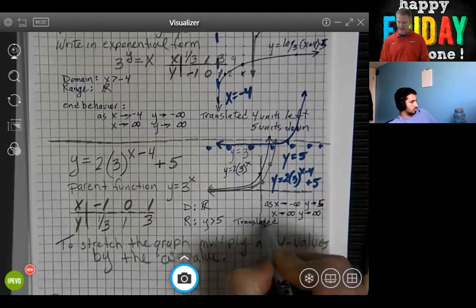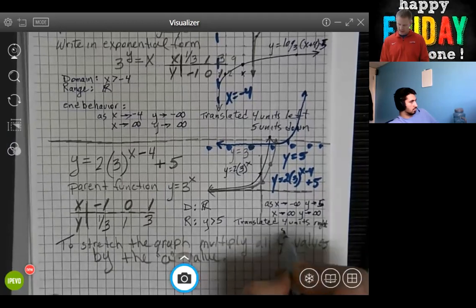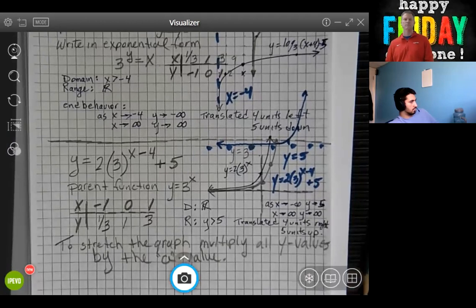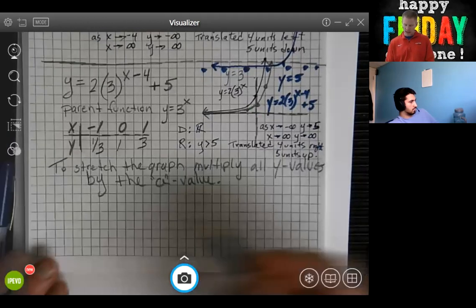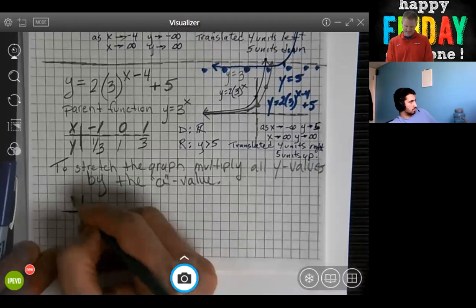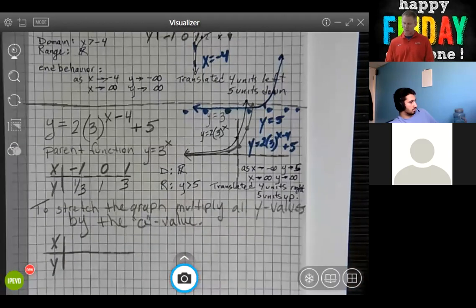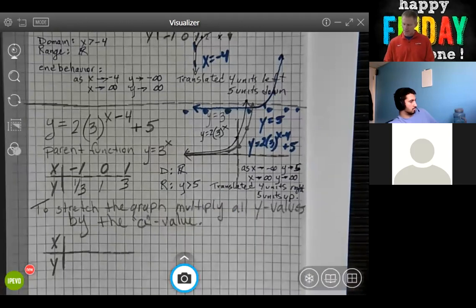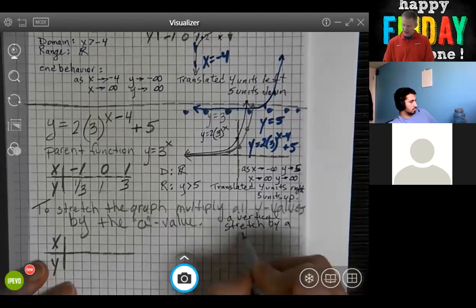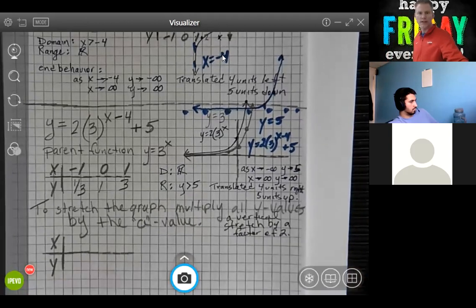And we translated four units right and five units up. Let's take a look at a possible table. Is there like a vertical stretch by two? Nice job, very proud of you. That is great. Yes, we had a translation. We also had a vertical stretch by a factor of two. All right, 10 points for Gryffindor on that one that was sweet good work.